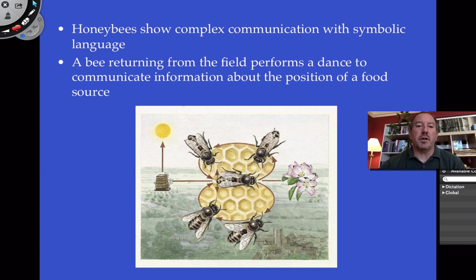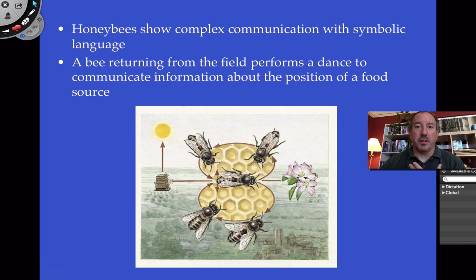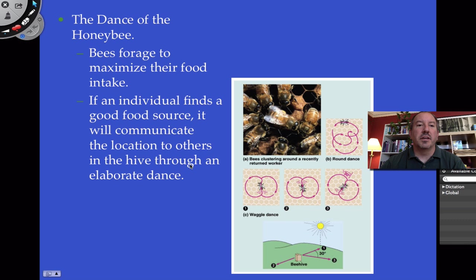Honeybees have this incredible ability. Here's their hive — they fly out, get nectar from flowers, then bring it back to the hive to create honey. When a worker flies out and finds some nice blossoms, it's able to go back to the hive and by performing a dance communicate to the other bees where the flowers are. It's able to determine the position of the food source. The bees can maximize their foraging strategy by communicating the distance the flowers are from the hive — and even the angle, using the sun.